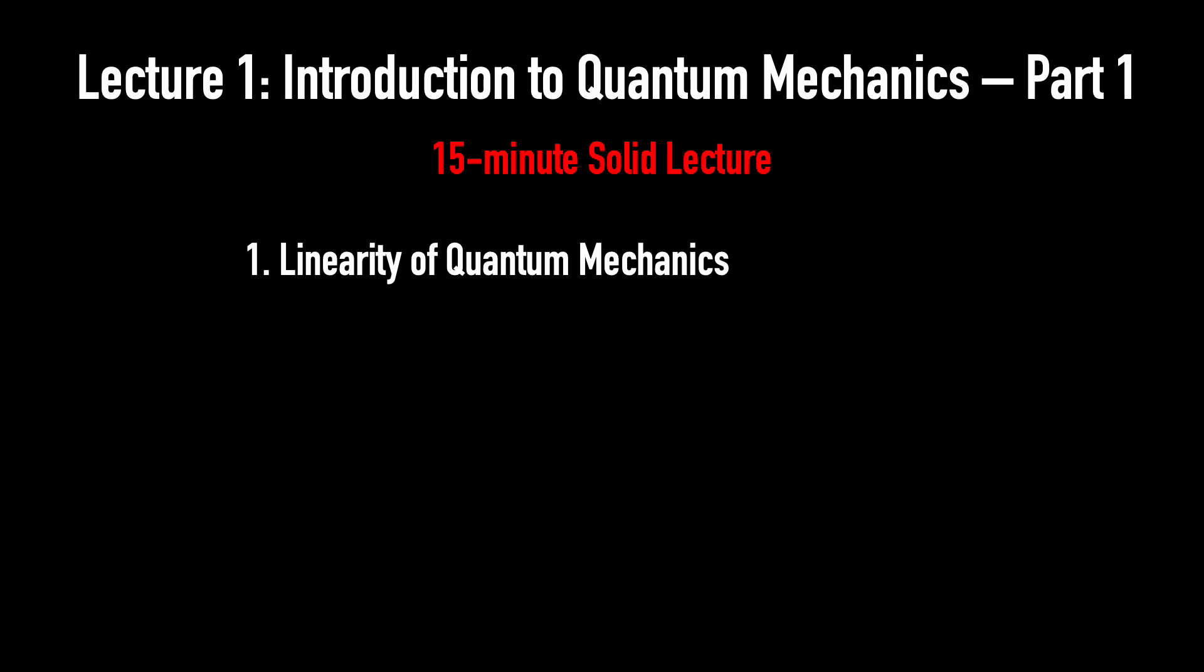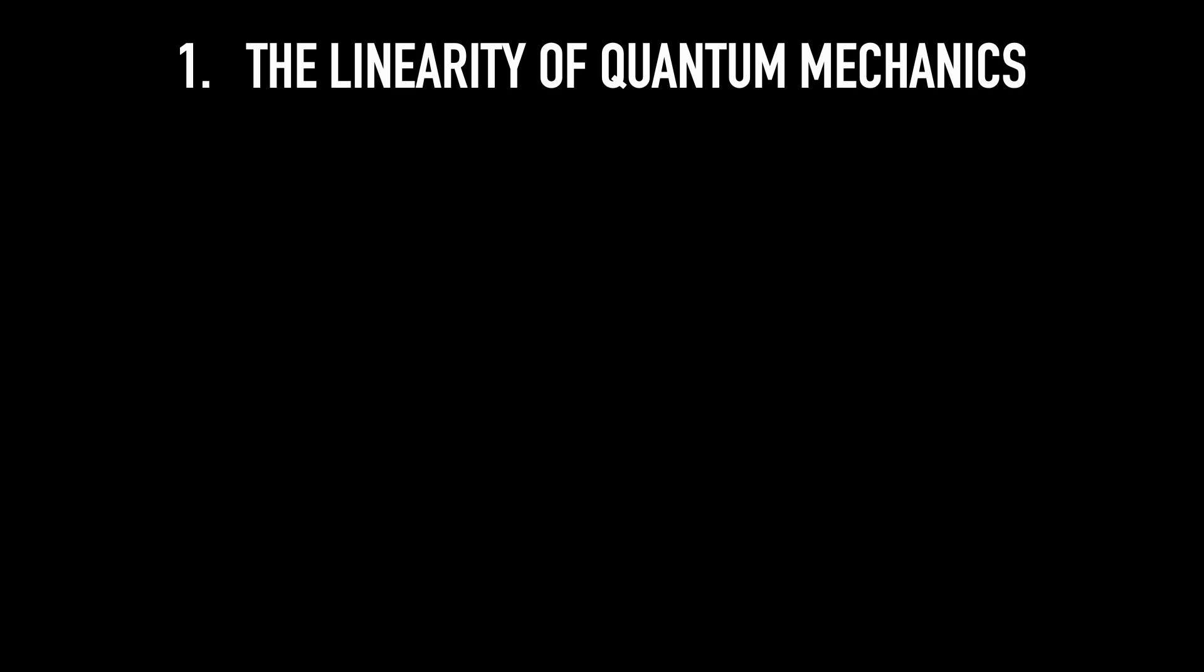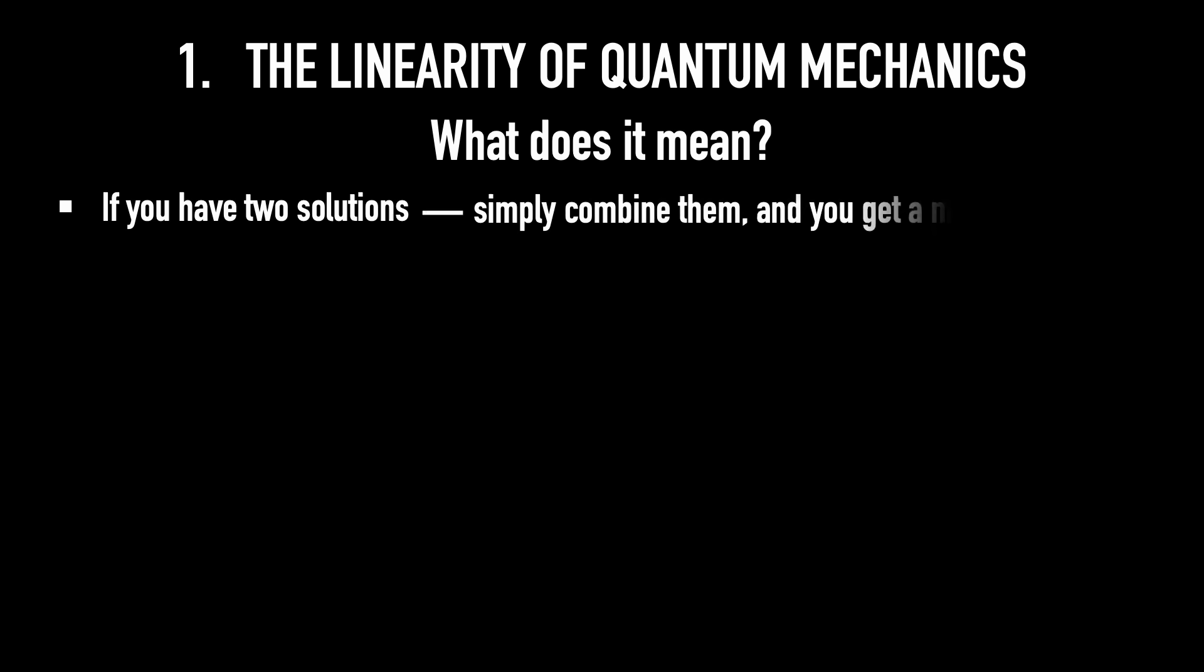We begin with feature number 1, the linearity of quantum mechanics. Linearity is a fundamental feature of quantum mechanics. What does this mean? Practically, it means that if you have two solutions, you can form a third by adding them. You don't need to change anything, and simply combine them, and you get a new solution.